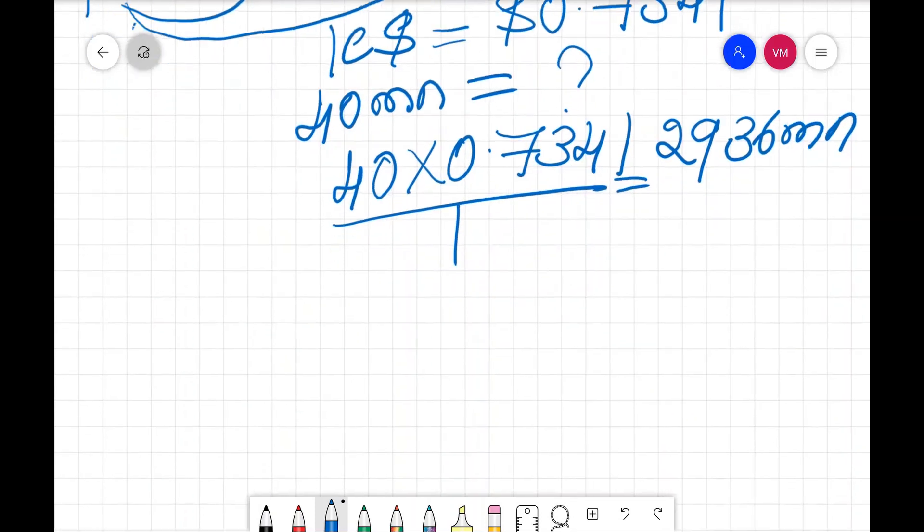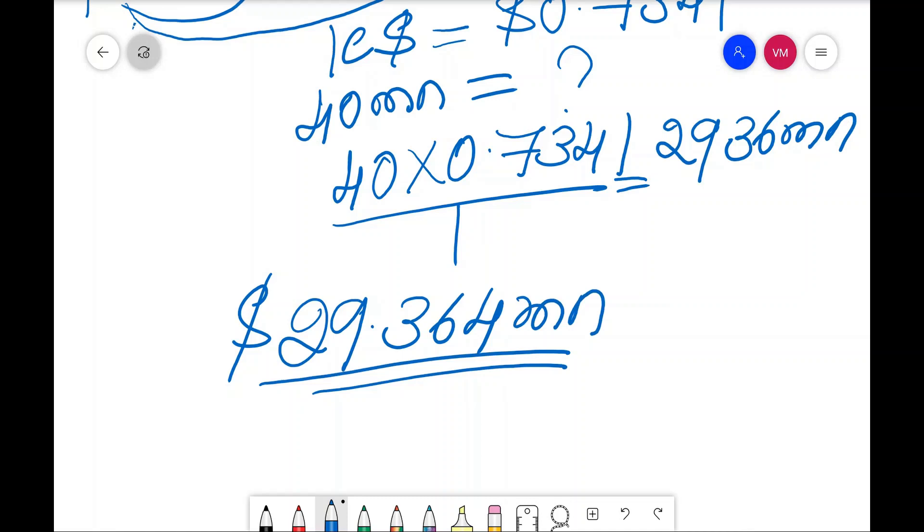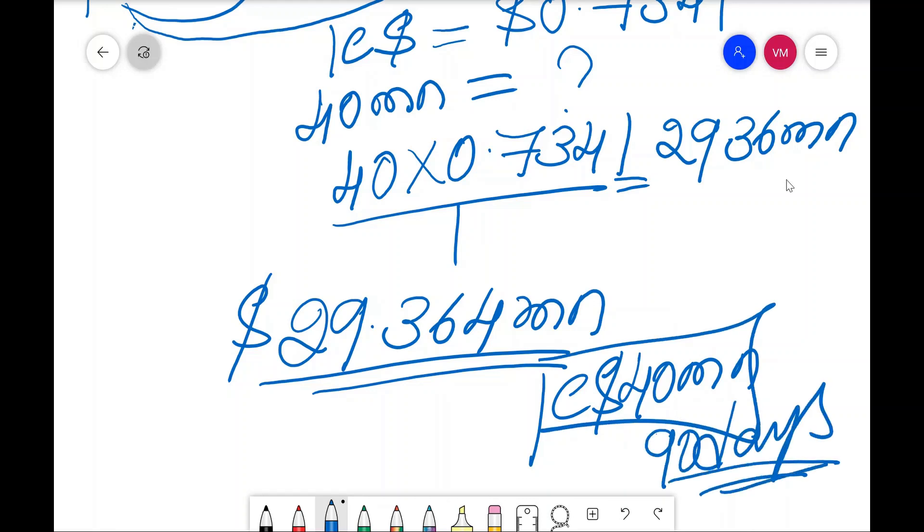This will give you 29.364 million. So, that means Pepsi company needs to pay 29.364 million US dollar to pay its debt. How much debt is there? 40 million Canadian dollar after 90 days. This is the answer for this problem.